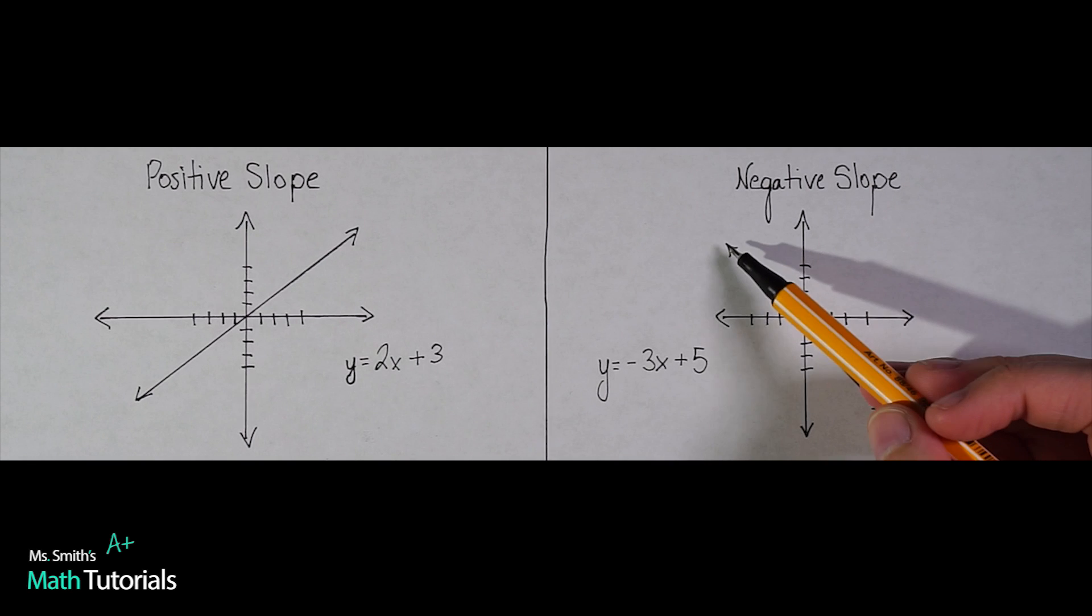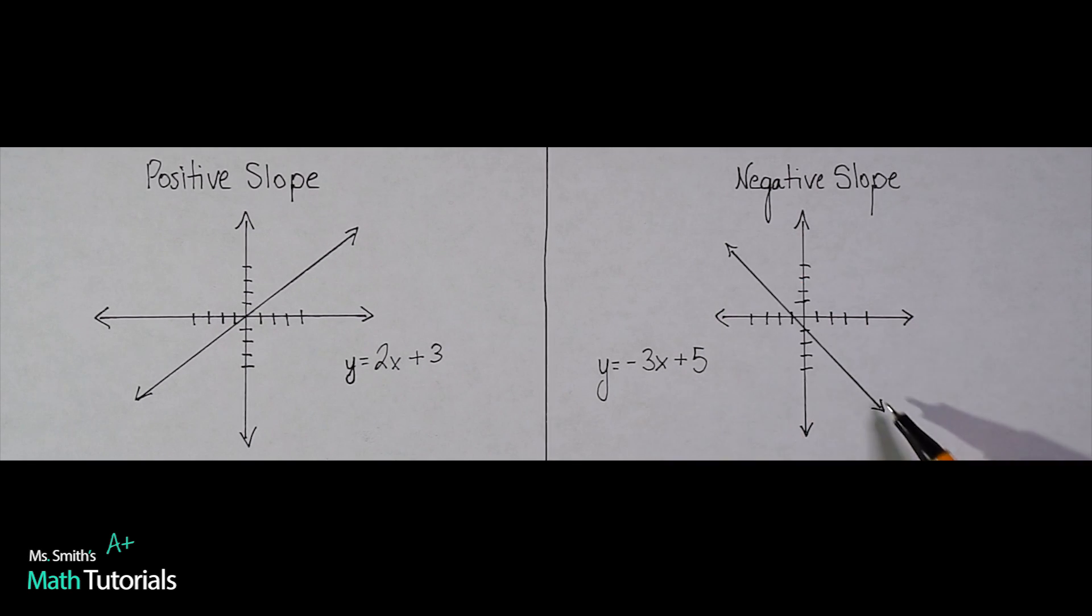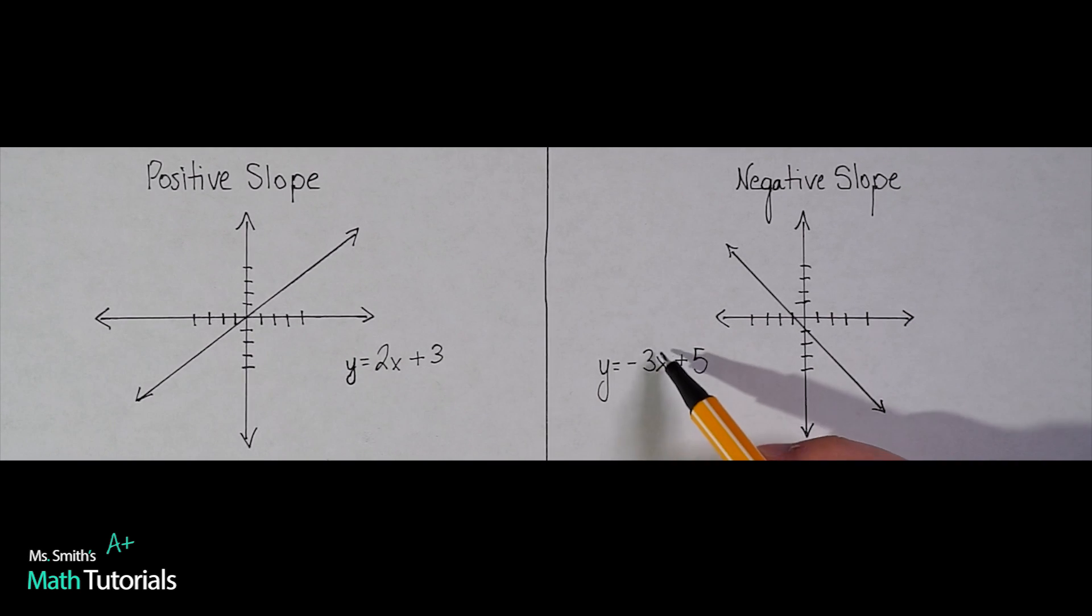We could also have a negative slope. This one, this is kind of like the people have gone over the hump of the ride, and now they're going down real fast. Example of this, again, it's not this one by any means, but an example would be y equals negative 3x plus 5. So my m value here is negative 3, and because it's negative, I know it's going to be a downward line.